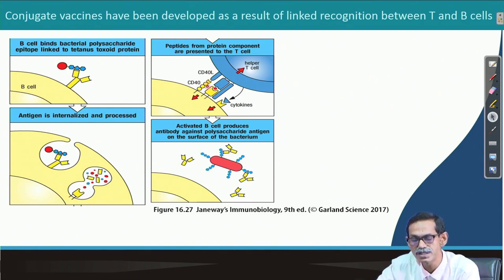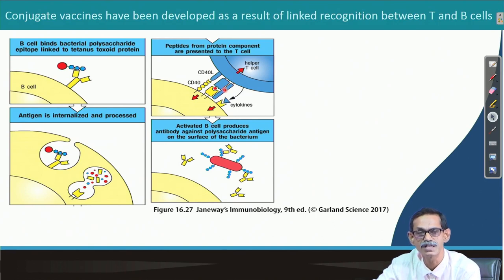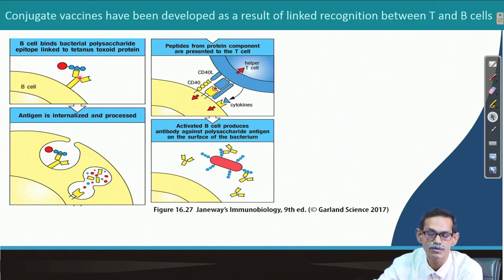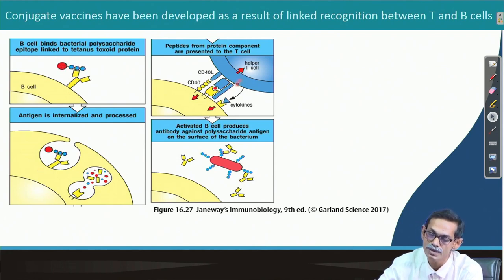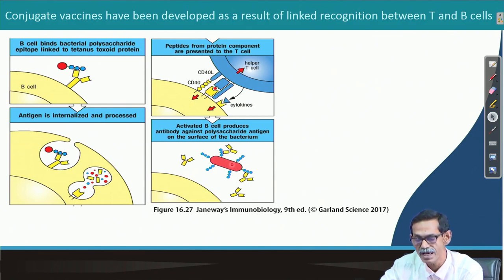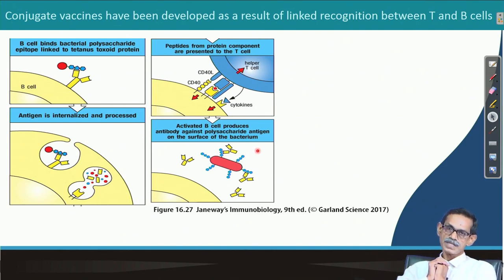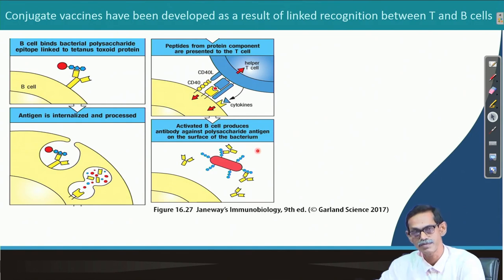MHC class II is presenting the red protein part — the tetanus toxoid. This MHC class II presentation will attract a helper T cell, which will bind and activate. The B cell, which has a receptor against the carbohydrate, will be activated by the presentation of the protein — that is why it is called a conjugate vaccine: carbohydrate and protein are conjugated. T cells see the protein part and activate the B cell, and the B cell produces antibody that binds to the bacterial polysaccharide. That is how conjugate vaccines were developed against meningitis, Streptococcus, and Haemophilus influenzae.